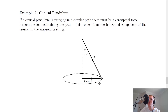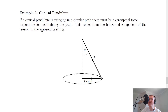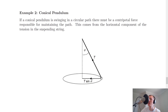The second example is a conical pendulum — a pendulum that moves in a cone-like motion. If a conical pendulum swings in a circular path, there must be a centripetal force maintaining that circular path. This comes from the horizontal component of the tension in the suspending string. With tension T acting along the string at angle theta, using SOHCAHTOA: sine theta equals opposite over hypotenuse, giving the centripetal force as T sine theta.